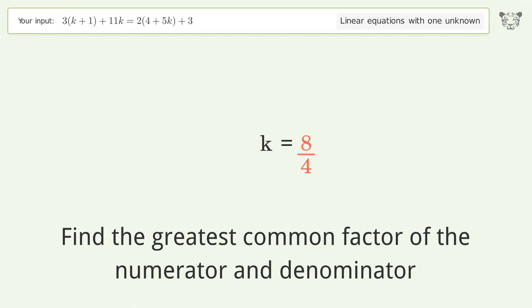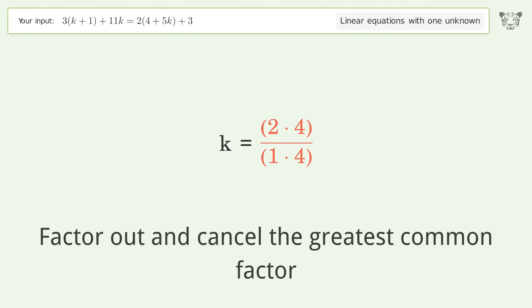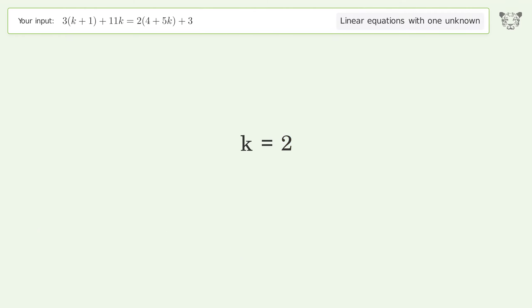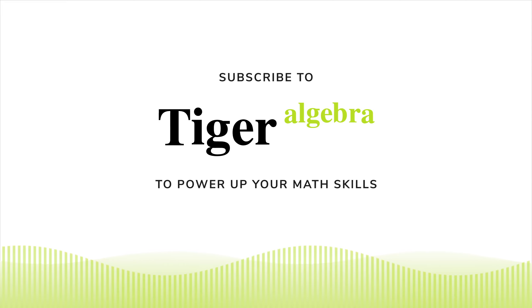Find the greatest common factor of the numerator and denominator. Factor out and cancel the greatest common factor. And so the final result is k equals 2.